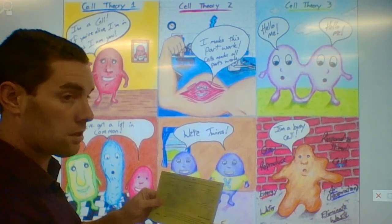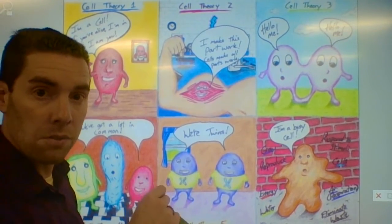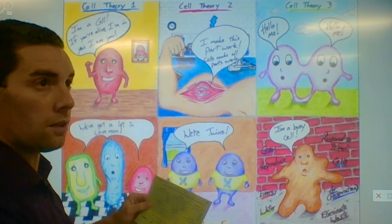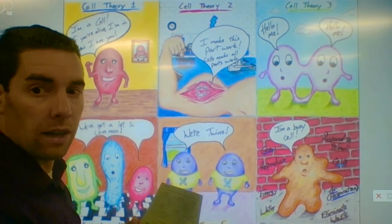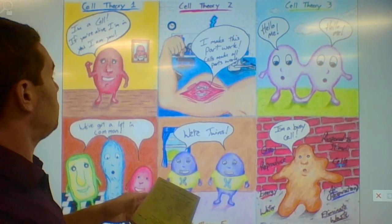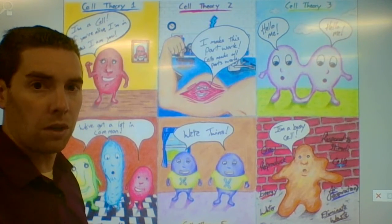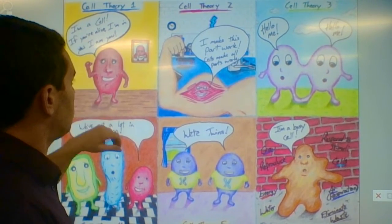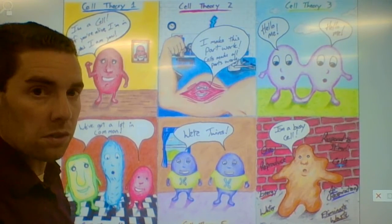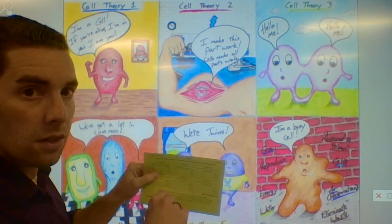Let's take the first one as an example. The first part of the cell theory says that every living thing is made of at least one cell. Mine's not very clever or funny, but you can come up with something more interesting. Mine has a single cell and the caption says, 'I'm a cell — if you're alive, I'm in you, I am you.' The concept is: if something is living, or was at any point, it would always have at least one cell. I have my caption and a colored background — you're going to get points for coloring both the cell and the background.